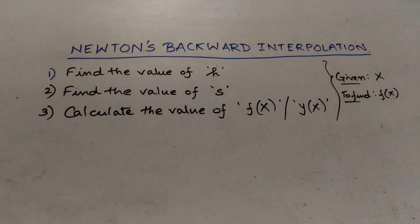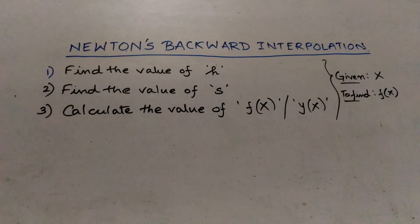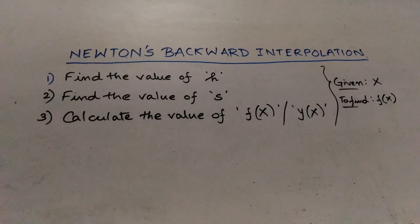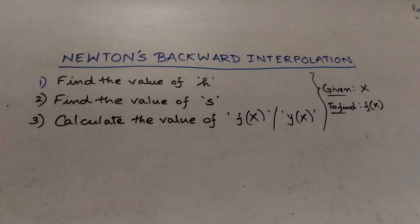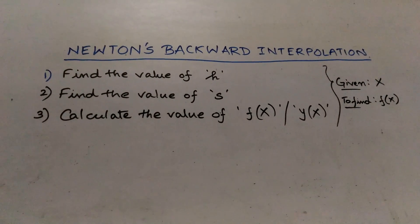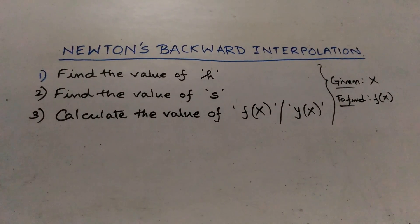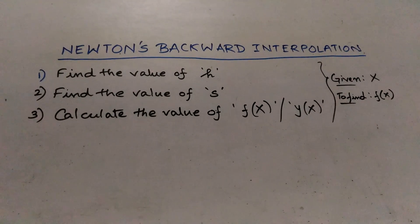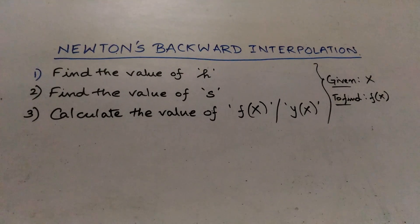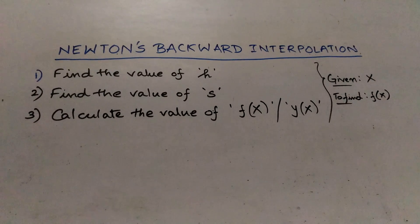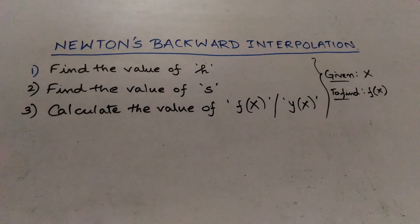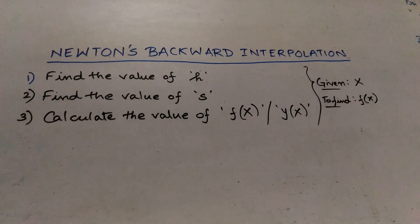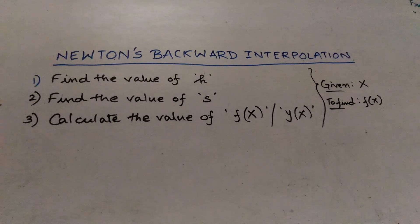To solve problems using Newton's Backward Interpolation method, we need to follow three steps, which are the same as that of Newton's Forward Interpolation method. The first step is to find the value of H. The second step is to find the value of S. The third step is to calculate the value of f(x) or y(x), given the value of x.